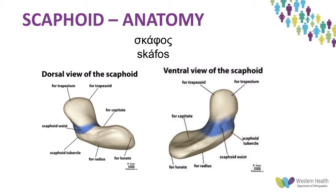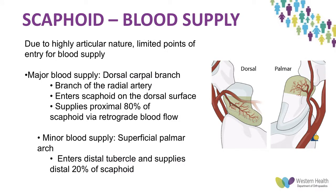The waist is one of the most common sites of scaphoid fractures. Looking at the blood supply: because of its highly articular nature, there are limited points of entry, and the majority of blood supply comes from the dorsal carpal branch, a branch of the radial artery. This enters the scaphoid at the dorsal surface at the distal pole and supplies the proximal pole by retrograde blood flow. The proximal pole essentially receives an end artery, so if blood flow is compromised by fracture, there is no anastomosis and the proximal pole is highly susceptible to avascular necrosis.